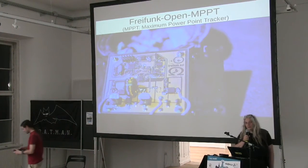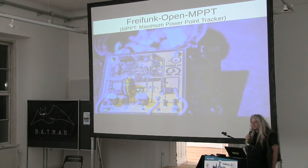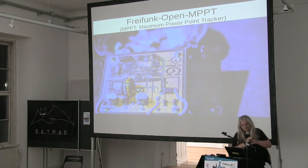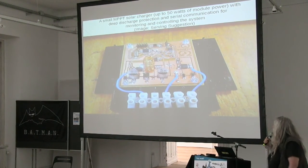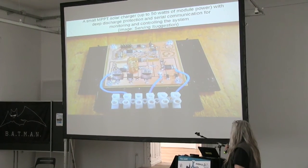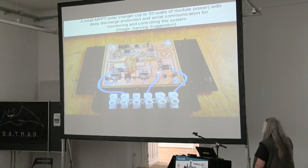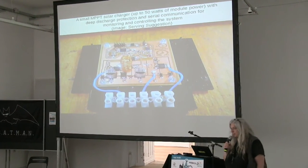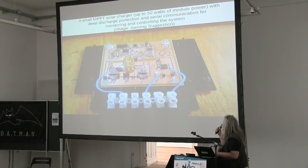Welcome to the talk about the Freifunk Open Maximum Power Point Tracker. It is a solar charge regulator up to 50 watts of solar power — it could be extended to more, but our design goal was to power all mesh nodes with autonomous power. It has special features like serial communication implemented so the system can be monitored. Basically, it's a small solar charge controller with a few special features.